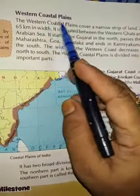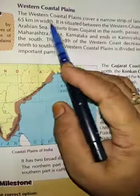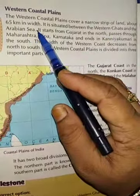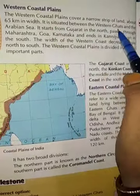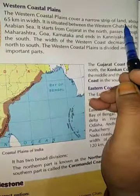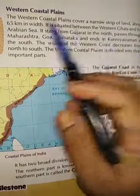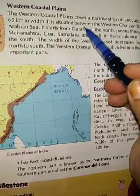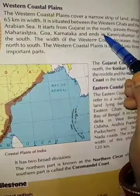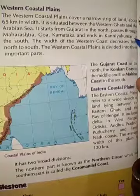Western coastal plains: The western coastal plains cover a narrow strip of land about 65 km wide. It is situated between the Western Ghats and the Arabian Sea. It starts from Gujarat in the north, passes through Maharashtra, Goa, Karnataka, and ends at Kanyakumari in the south.